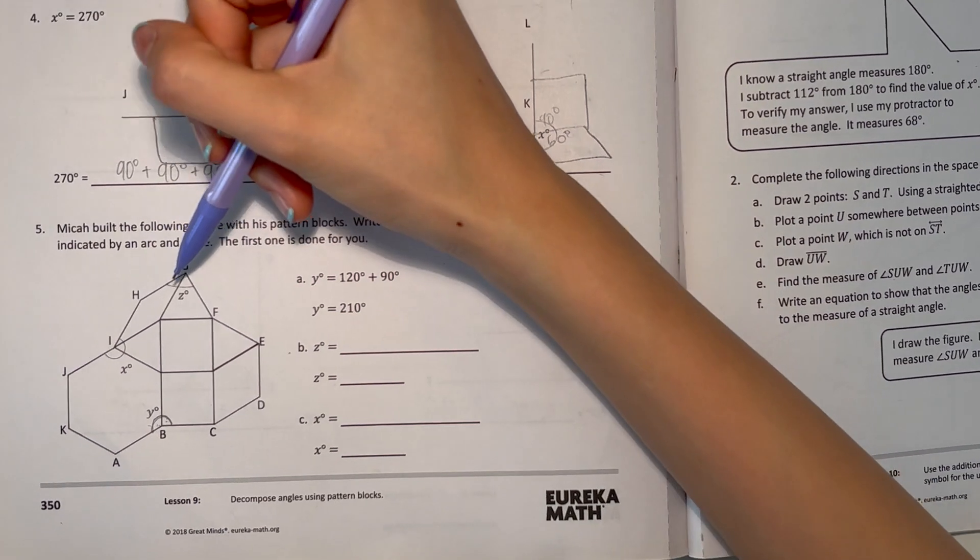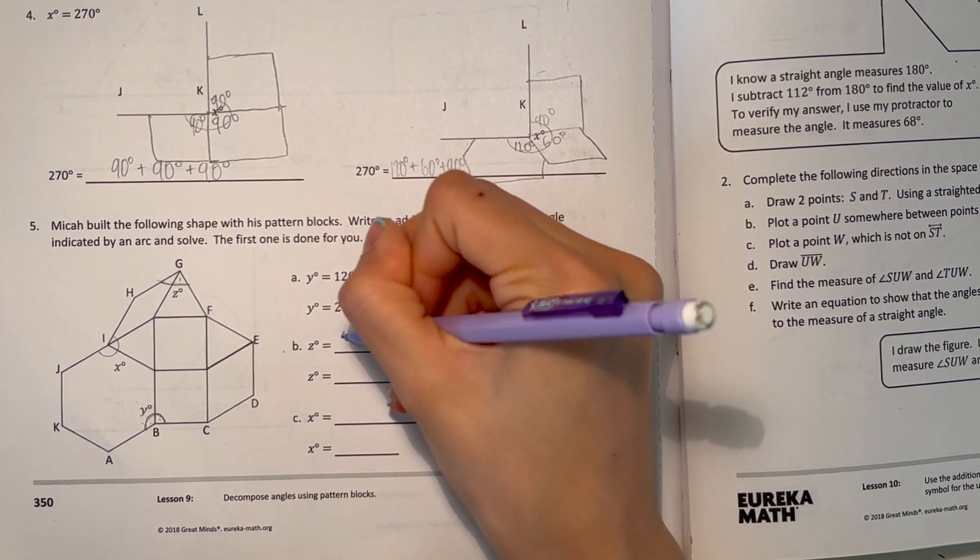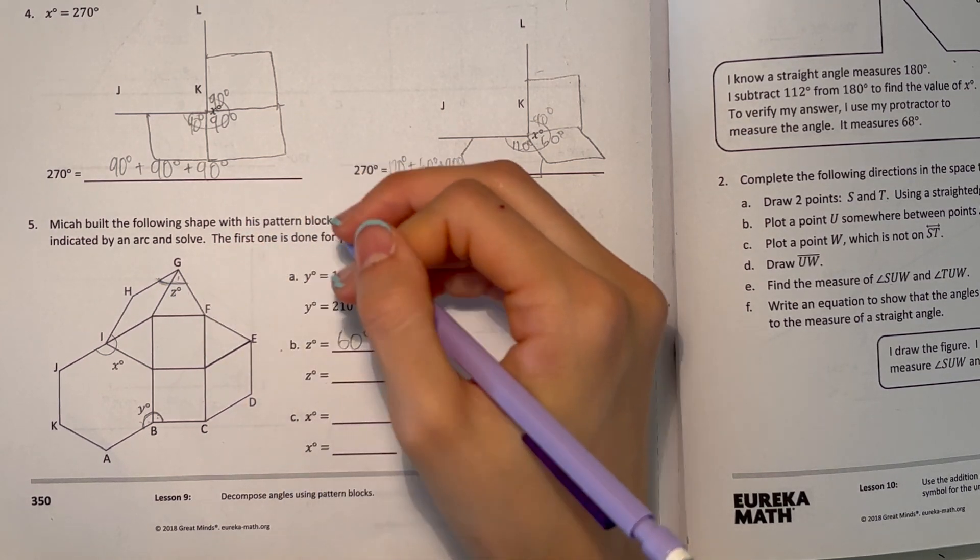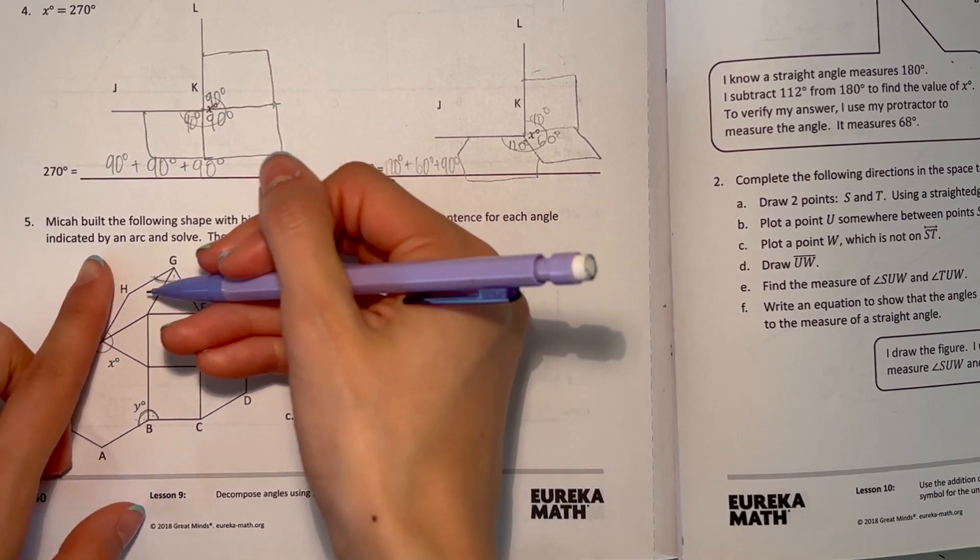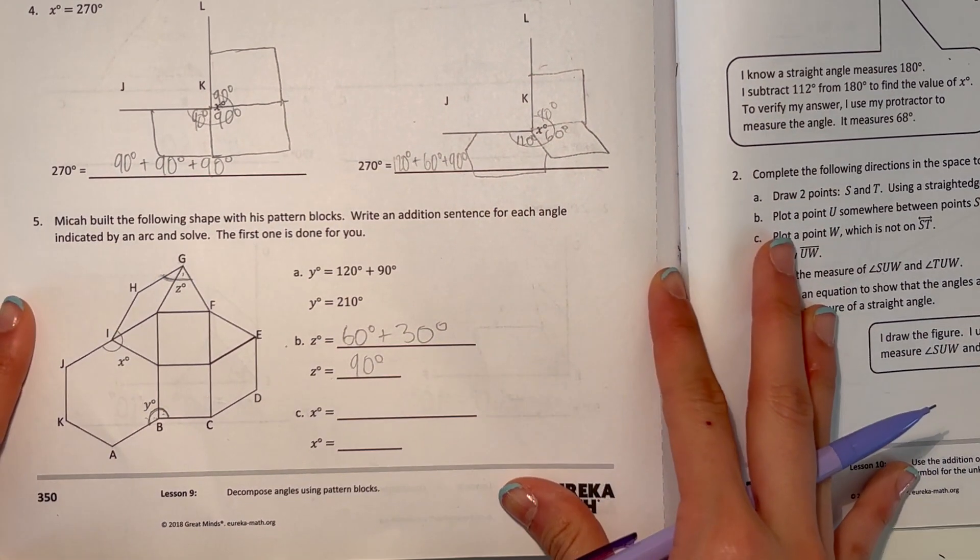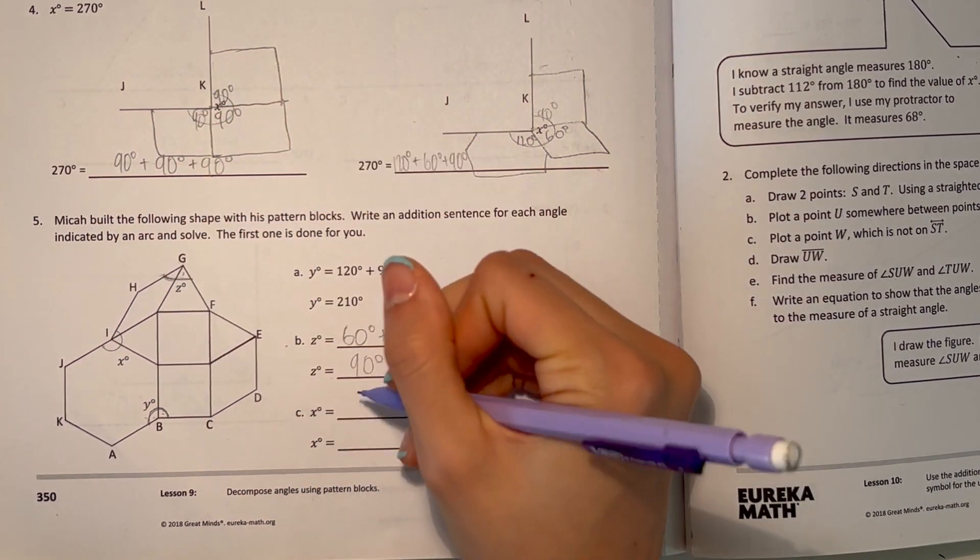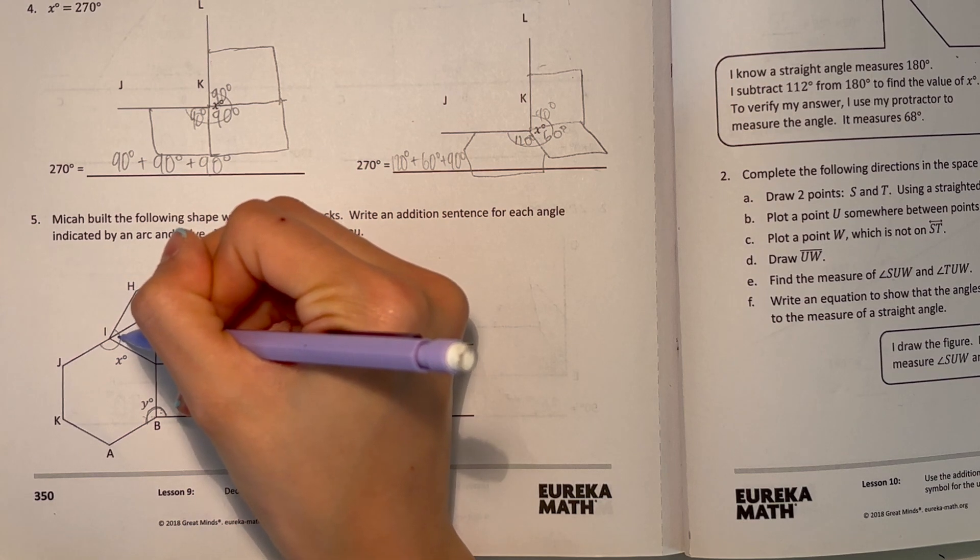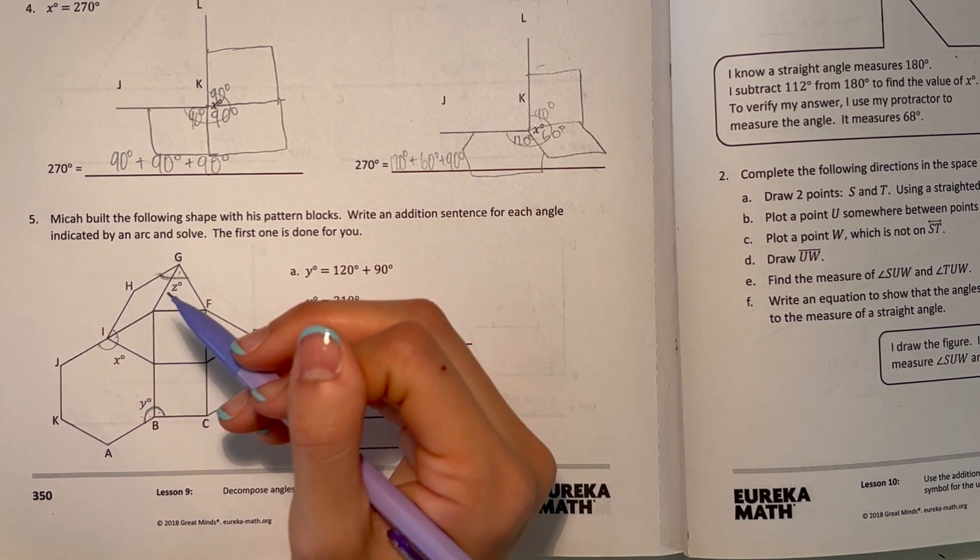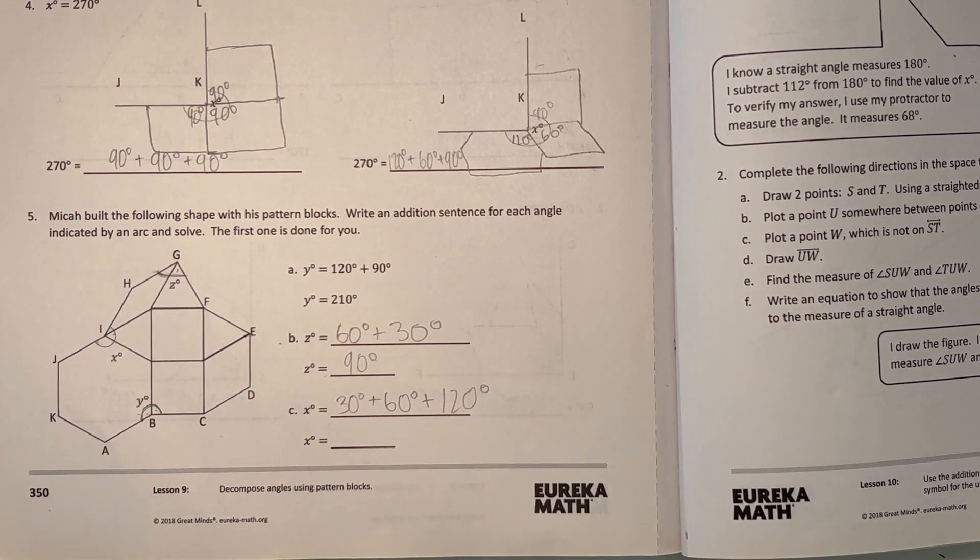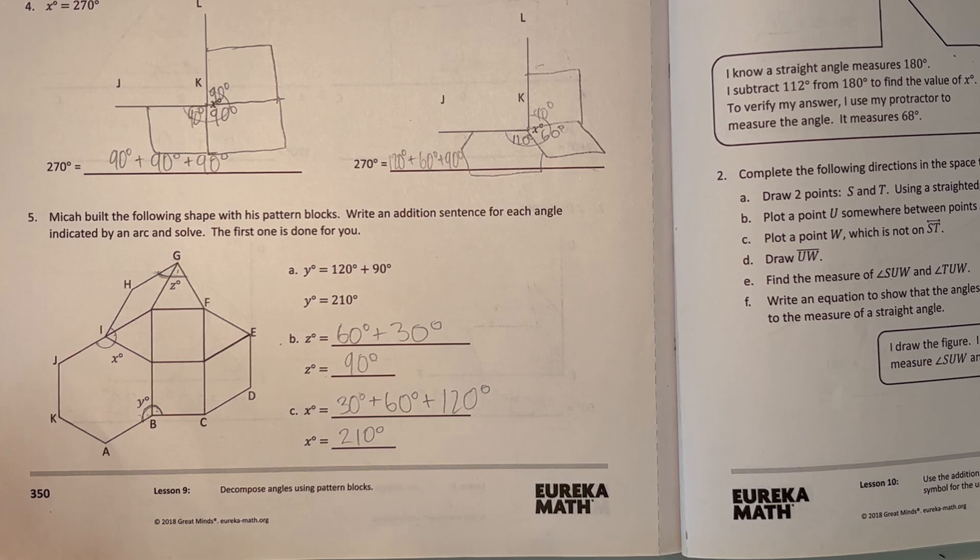If we look at z, we're measuring this. This part of the triangle which we know is 60 degrees, and this part is part of the parallelogram which is 30 degrees. 60 plus 30 is 90 degrees. Now for x, this is the whole thing we're measuring. This part is 30 degrees, and this is part of the triangle so it's 60 degrees, and last part, part of the hexagon, so that's 120 degrees. 30 plus 60 is 90 plus 120 is 210. So angle x is 210 degrees.